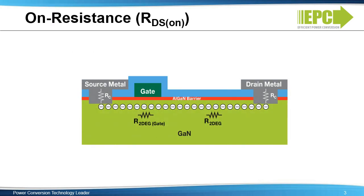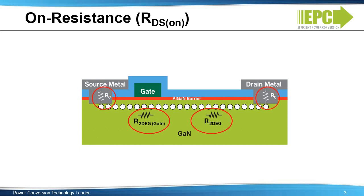This is an illustration of the cross-section of a typical enhancement mode GAN transistor. In a GAN transistor, the source and drain metals have to connect to the two-dimensional electron gas, or 2-DEG, through the aluminum gallium nitride barrier. This component of resistance is called the contact resistance, RC. Electrons then flow in the 2-DEG with its associated resistance, R2-DEG. The on resistance, or RDS on, of the transistor is the sum of all these resistive elements, plus any additional resistance from the other metal layers and connections to the outside world.